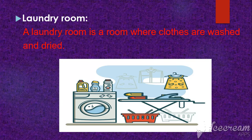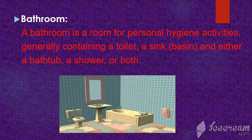Laundry Room: a laundry room is a room where clothes are washed and dried. Bathroom: a bathroom is a room for personal hygiene activities, generally containing a toilet, a sink, and either a bathtub,